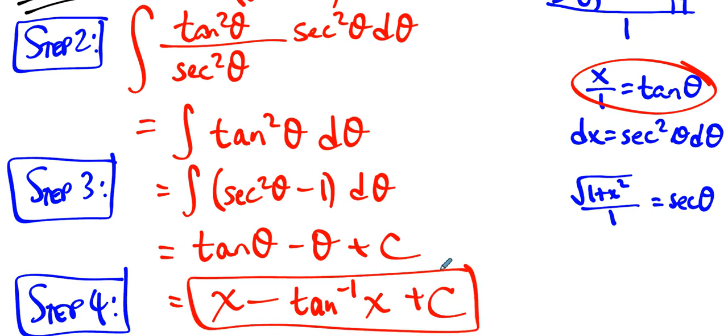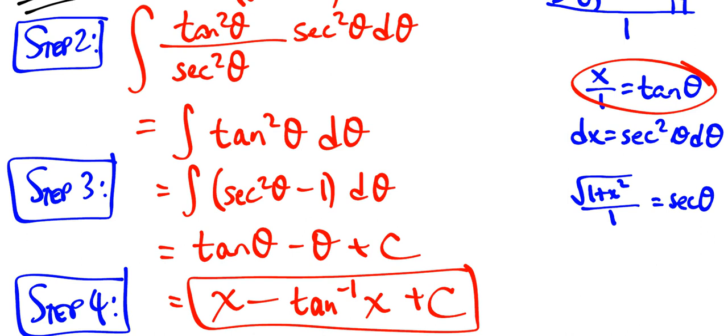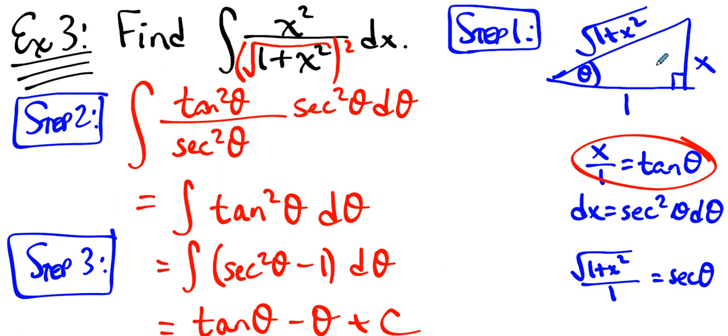The process runs the same every single time. Every single time the process is the same. We set up a right triangle where the radical is one of the sides.